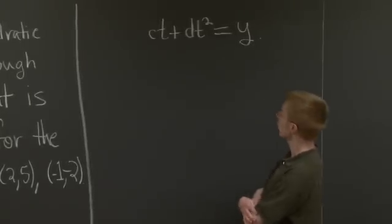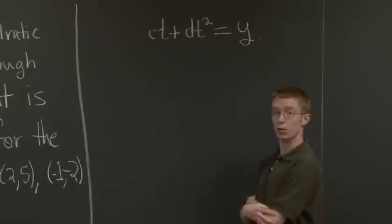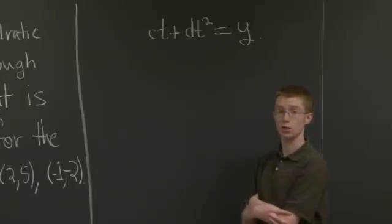Now, if it were just any quadratic equation, then we would have a constant term. But through the origin just means that the constant term is 0.